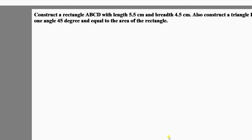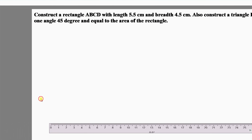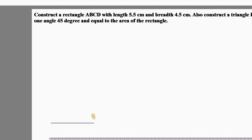First, we need to draw rectangle ABCD. Let's start from line BC with length 5.5 centimeters. We know the interior angles of a rectangle are 90 degrees, so we make an angle of 90 degrees at point B.